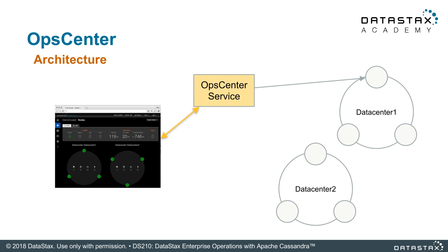These show up as two separate tabs in your browser. When you run OpsCenter, your browser talks to an OpsCenter web server, and the web server talks to an agent process deployed on each of your clusters. These agent processes communicate with the DSE Cassandra process via JMX and Native Transport interface to update settings and monitor various aspects of your nodes.